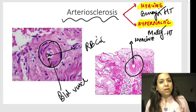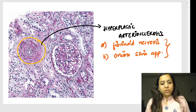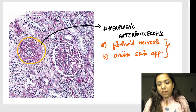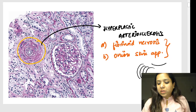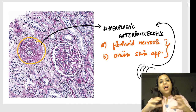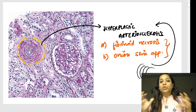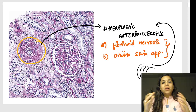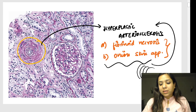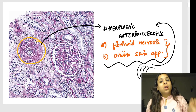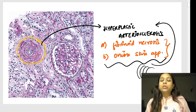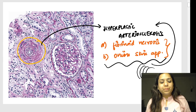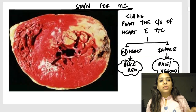In contrast, in this image you can see laminated concentric thickening of the vessel wall due to proliferation — this is called hyperplastic arteriosclerosis. Because pathologists are fond of food, it looks like an onion skin appearance. A popular MCQ: onion skin appearance of the vessel wall is seen in — answer is hyperplastic arteriosclerosis or malignant hypertension.